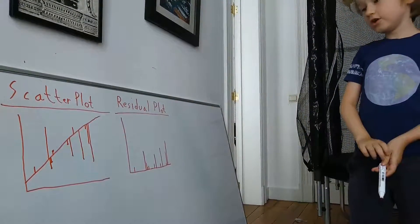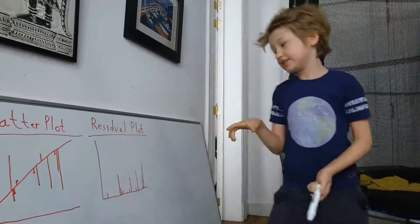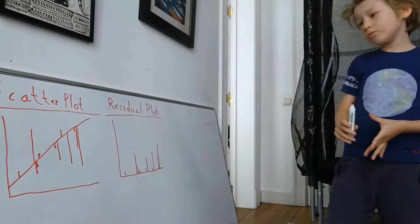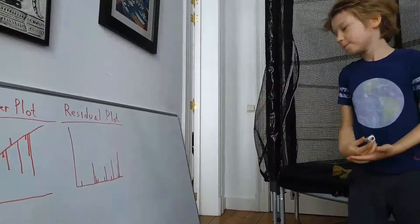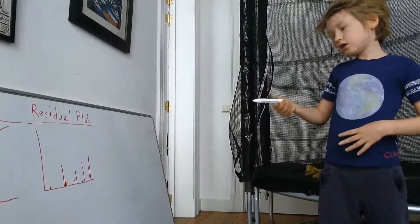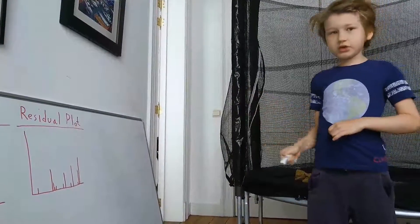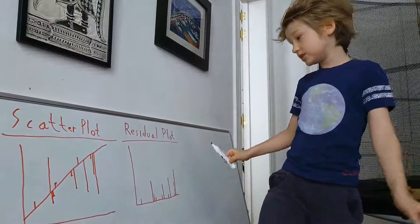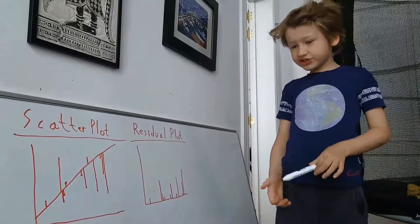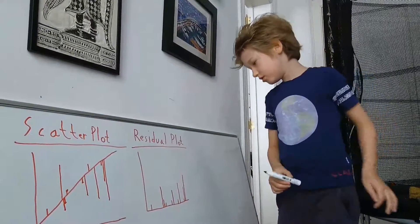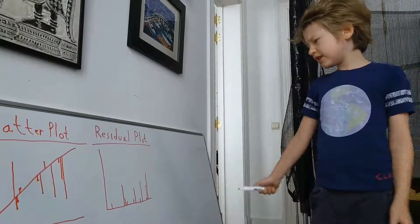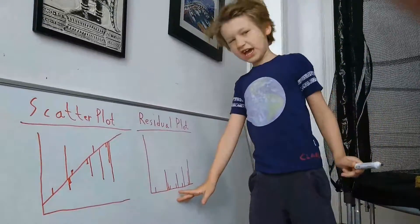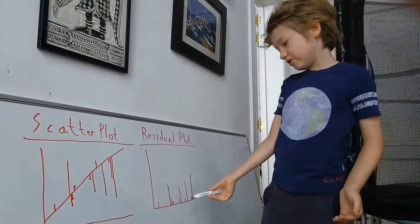If we remember the original scatter plot, the slope is going to be the same. This is the residual plot. If you draw the line now, as a human being eyeballing it, it would be the same line. You can see that if the points are randomly scattered around the line, you don't actually have to draw it because it's already there.